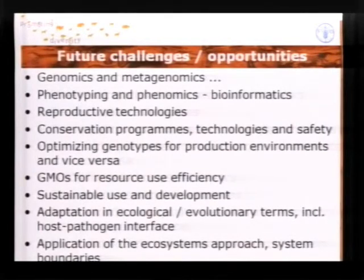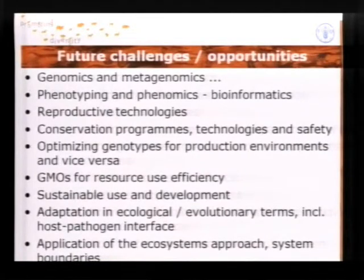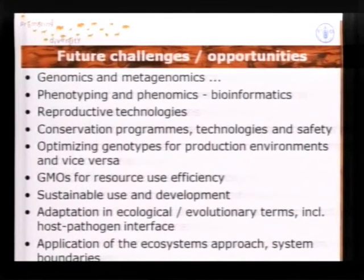This brings us to a broader view on adaptation — not only how we can adapt the animal to climate change, but adaptation in broader ecological and evolutionary terms, which includes the host-pathogen interface and the rumen microbiota and how they react in different ecosystems. And lastly, the application of the ecosystems approach, and with animals higher up on the food chain, where do we cut system boundaries depending on the environmental, social, or economic good that we want to optimize.